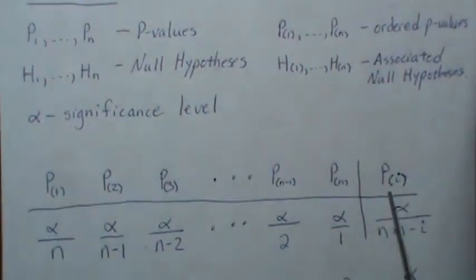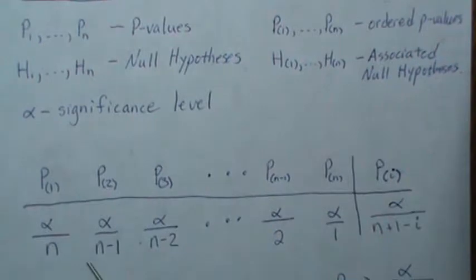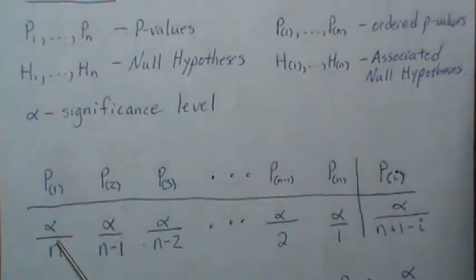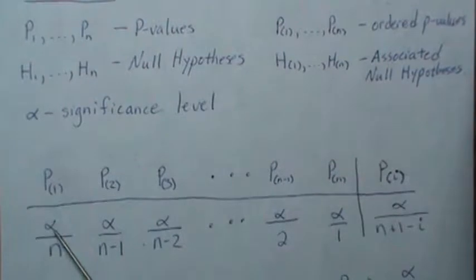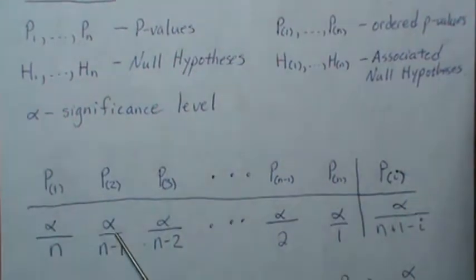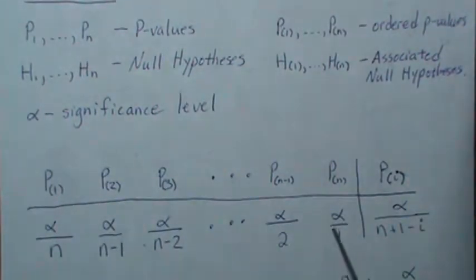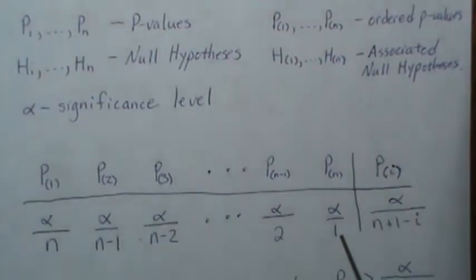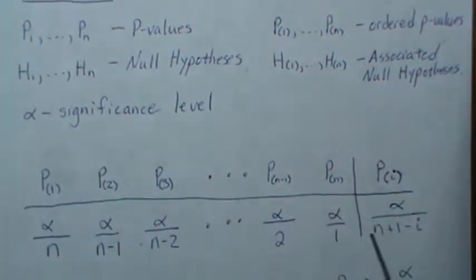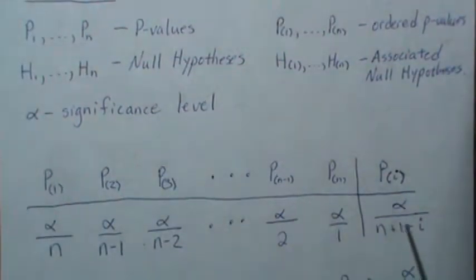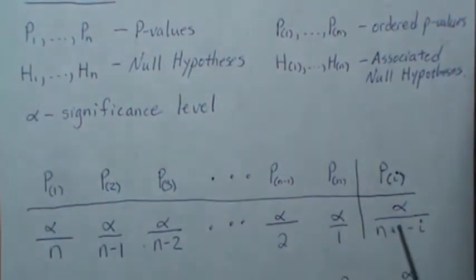Generically, we call the ordered p-value P_i. For the smallest, we compare it against alpha over n. For the second, we compare the p-value with alpha over n minus 1, all the way to the largest p-value, which we compare with alpha. This is generically how you set the significance level up.